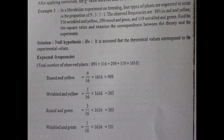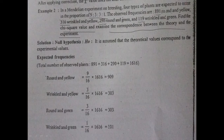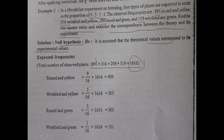This example was for monohybrid cross. Similarly, for the dihybrid cross, the plants are expected to occur as per the dihybrid ratio 9:3:3:1. The observed frequencies are 891, 316, 290, and 119 for round yellow, wrinkled yellow, round green, and wrinkled green respectively. We need to find the chi-square value and examine the correspondence between theory and experiment. The null hypothesis: theoretical values correspond to the experimental values. Total plants observed: 1616.